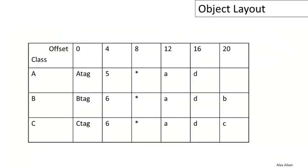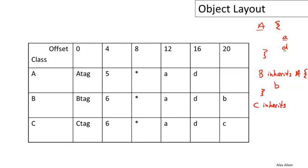Let's look at our example. Class A has two attributes, A and D — it doesn't matter what their types are. Then we have B, which inherits from A, and B adds an attribute little b. Then we have C, which also inherits from A but has no relationship to B, and class C defines an attribute little c. That's the structure of our example relevant to the layout of the objects.